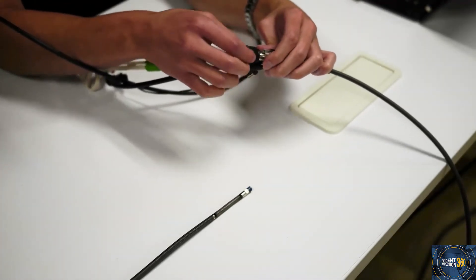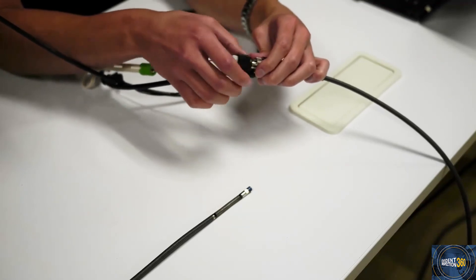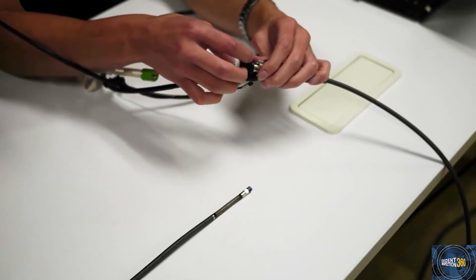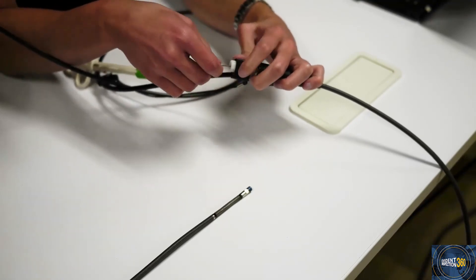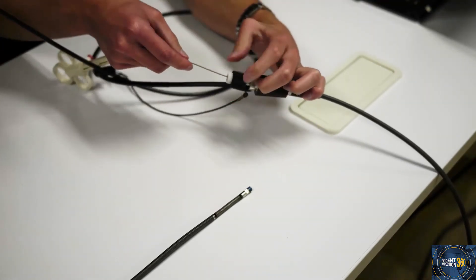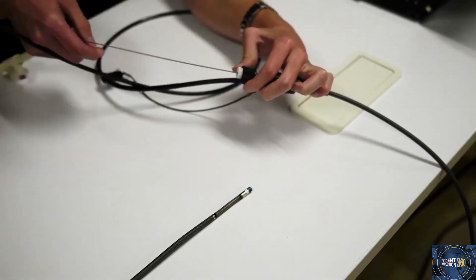Also, don't forget to secure the chuck screw after you're done installing it. Now for taking it out, it's the opposite process—you unscrew it in order to release, and then you just start pulling the wire out.